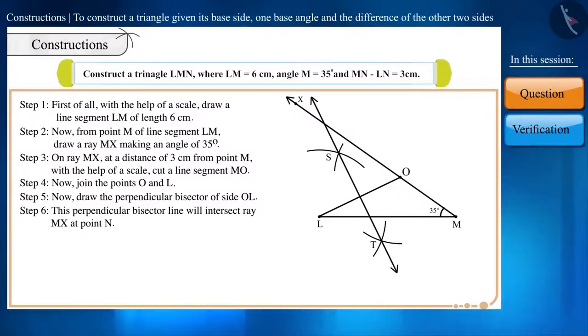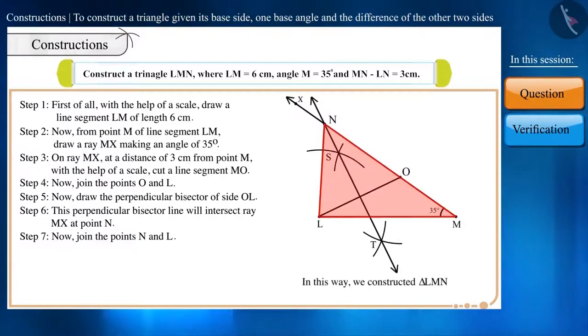Step 6. This perpendicular bisector line will intersect ray MX at point N. Step 7. Now join the points N and L. And in this way, we constructed the triangle LMN.